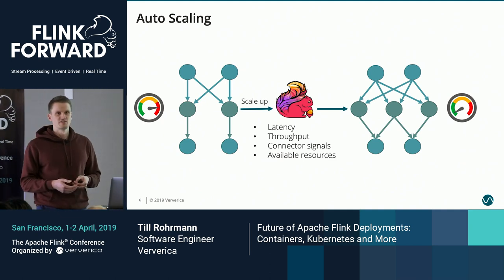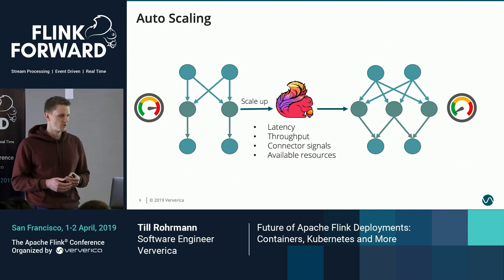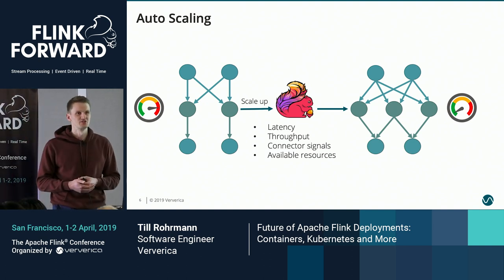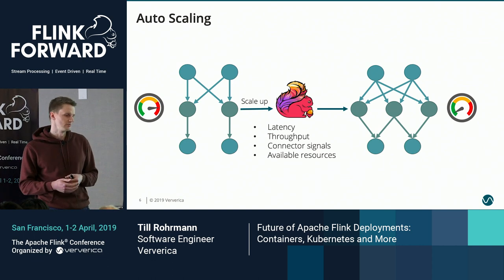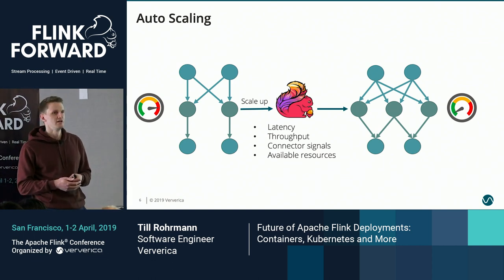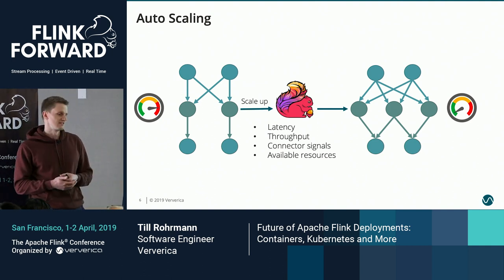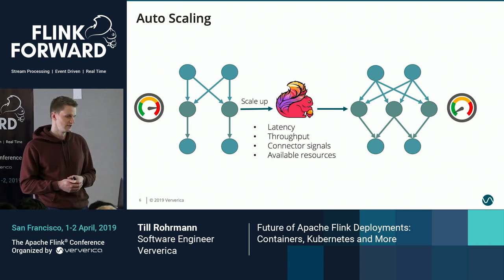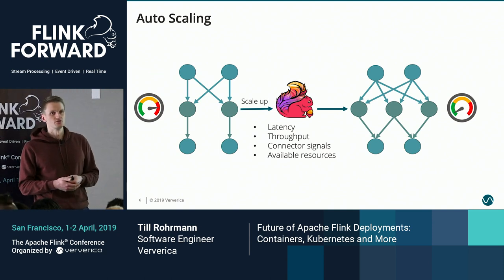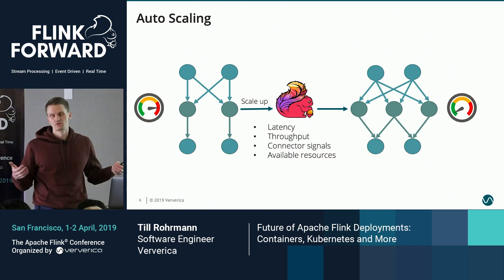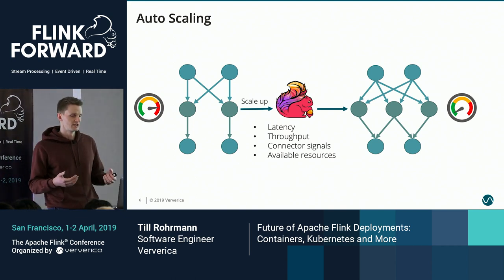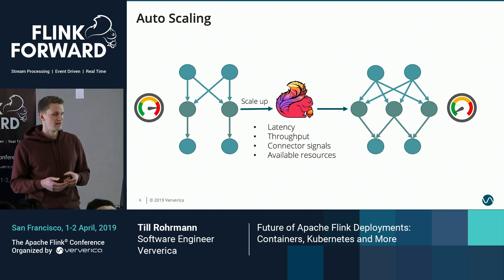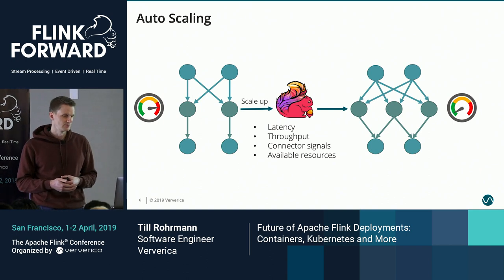For both the reactive mode and the active mode to properly work, we need autoscaling — Flink jobs need to be able to adjust their parallelism. The idea is to introduce rescaling policies which one can define for every operator, so every operator will have a way to tell Flink that it needs to scale up or down. You can think of various signals: monitoring metrics like latency or throughput, signals from external systems, or in reactive mode, the number of available resources which could trigger such a scaling event.